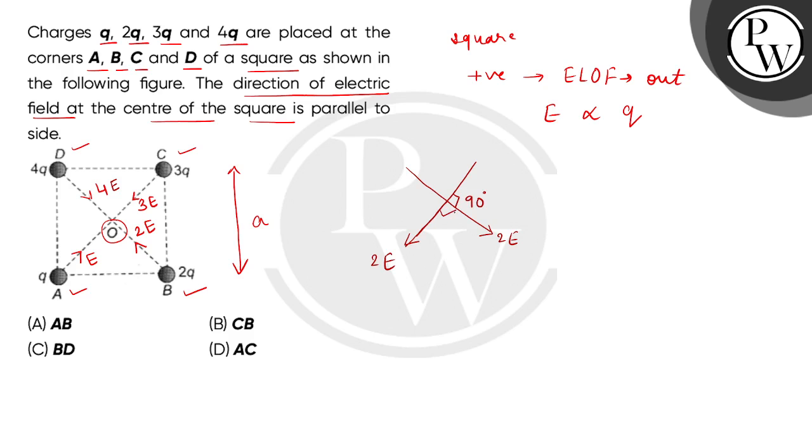So children, now we can see here the 90 degree angle. So the net field will be acting like this. So which side are we getting parallel? That is parallel to side CB. So the correct answer will be option B. Thank you, bye.